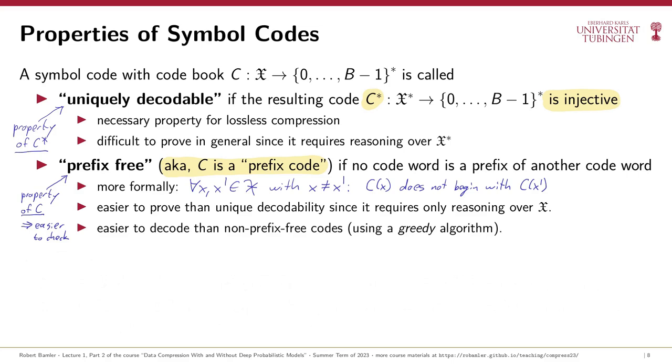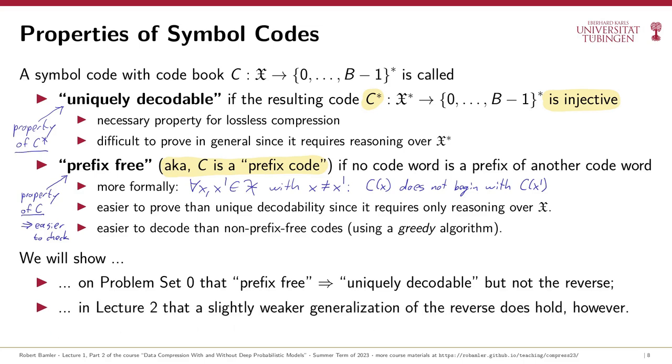So, on the one hand, unique decodability is the minimal requirement that we have for a symbol code to be useful for lossless compression. But on the other hand, prefix-freeness is easier to prove and prefix codes are also easier to work with. Luckily, we can reduce one to the other. You'll first argue on problem set 0 that all prefix-free codes are automatically uniquely decodable, so they definitely satisfy the minimal requirement to be useful. Then, in the next video, we'll prove a less obvious theorem that states that for every uniquely decodable symbol code, there exists a prefix code that is just as good in every regard, so there is no reason to use a symbol code that is not a prefix code.